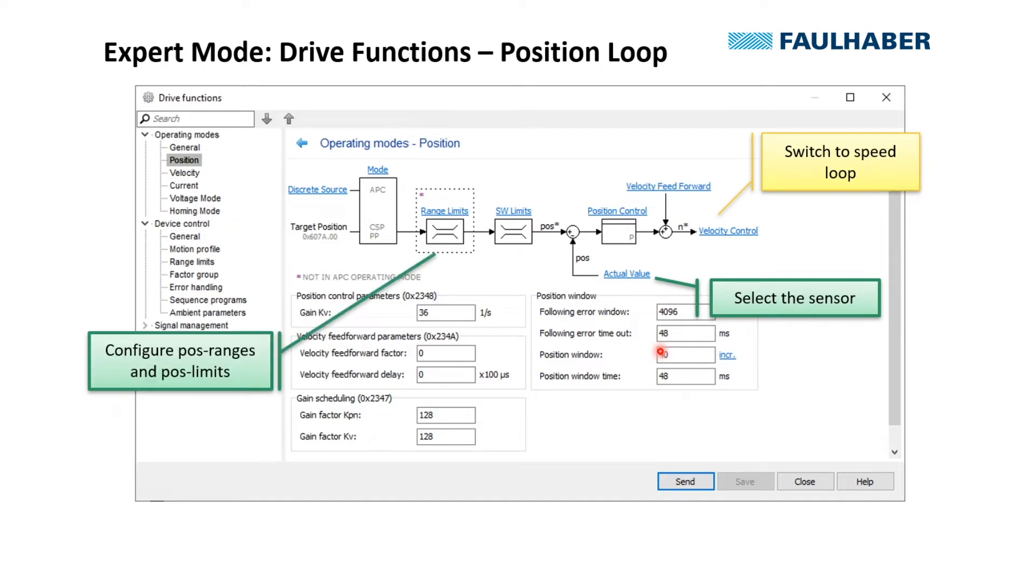And then here is the option to apply limits for either the position range you might move in or the absolute position limits. And of course again the option to select an analog input as the source for the target position.